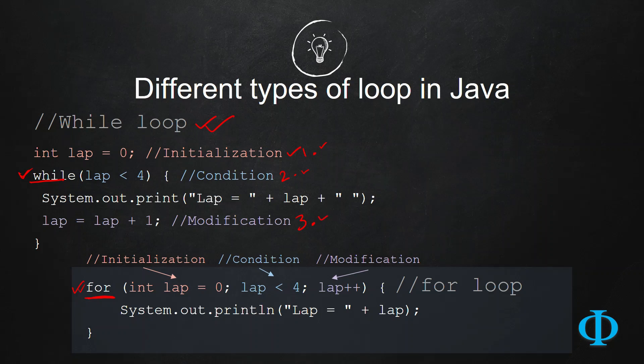But in for loop, as you can see in this example, all three different things - initialization, condition, and modification - everything is compacted inside one line.